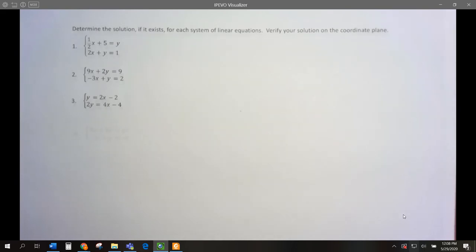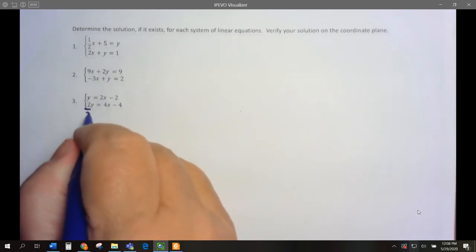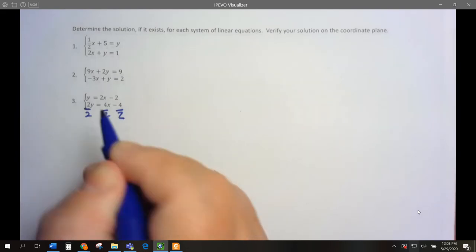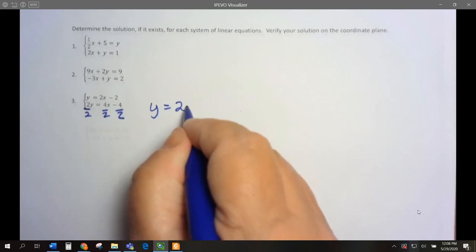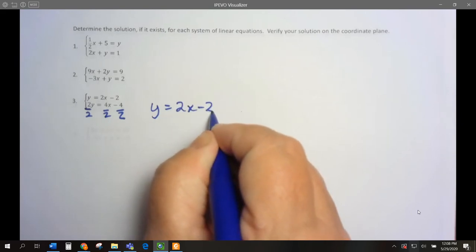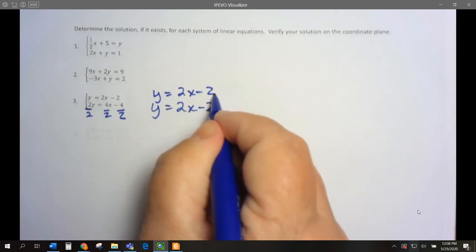Problem 3. They're both in slope-intercept form. But this one isn't quite there because we have a 2 in front. So let's take this and divide everything by 2 to simplify it. We would end up with y equals 2x minus 2. Our top one was y equals 2x minus 2.